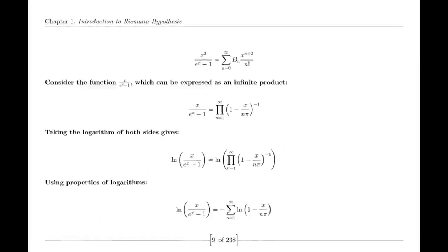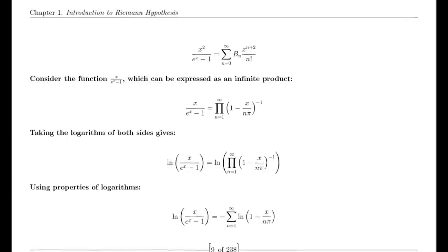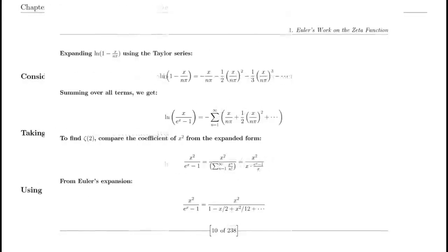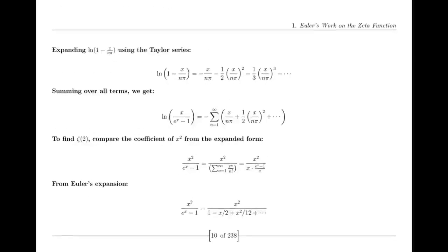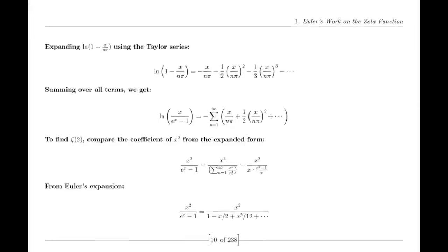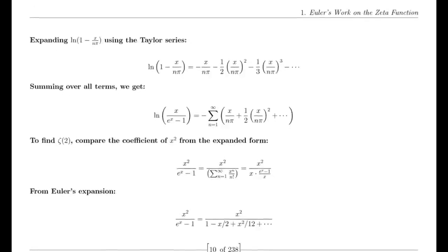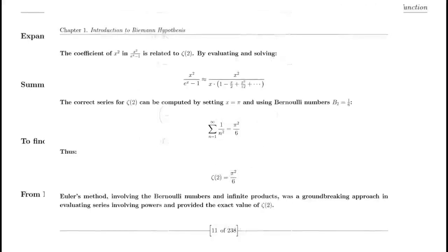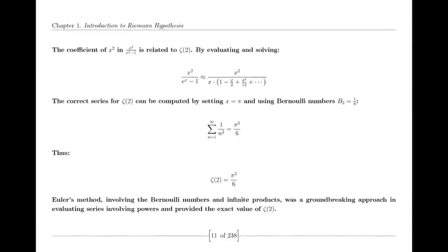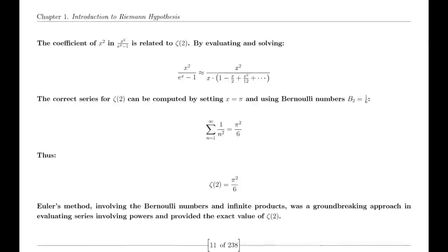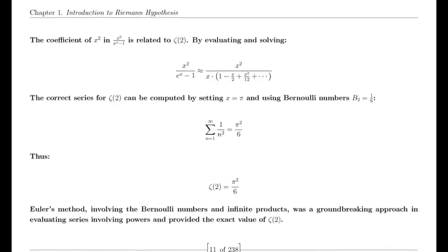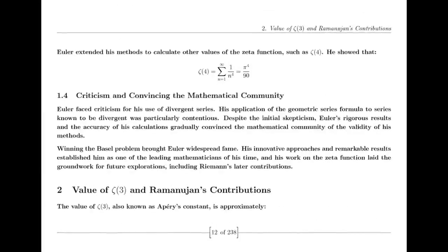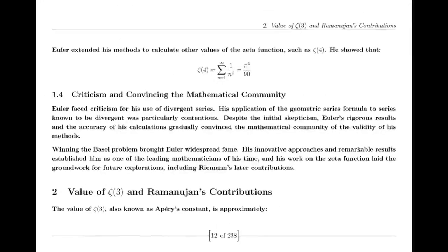Riemann's Hypothesis. Finally, we address the Riemann Hypothesis itself. Riemann proposed that all non-trivial zeros of the zeta function lie on the critical line where the real part of s is one-half. This hypothesis has profound implications for number theory, particularly in understanding the distribution of prime numbers. Despite extensive numerical evidence supporting the hypothesis, a formal proof or disproof remains one of the greatest challenges in mathematics.